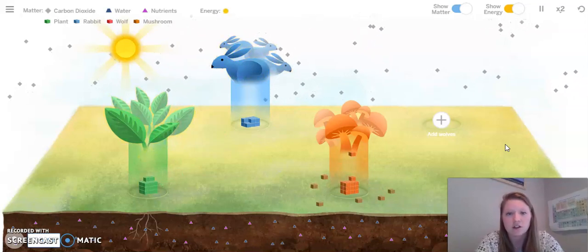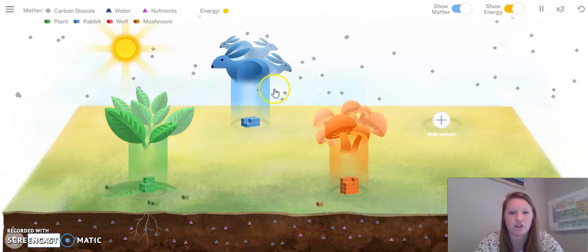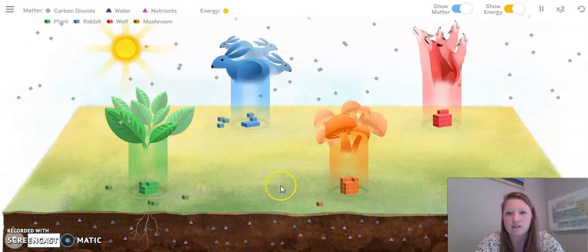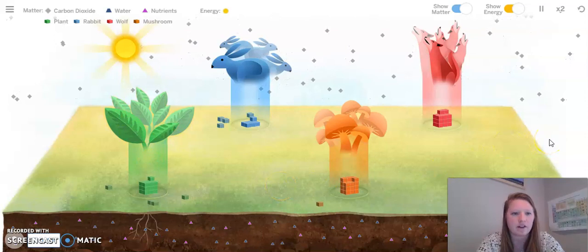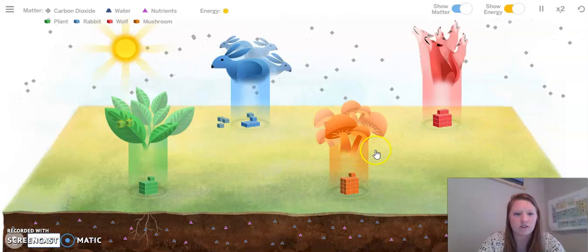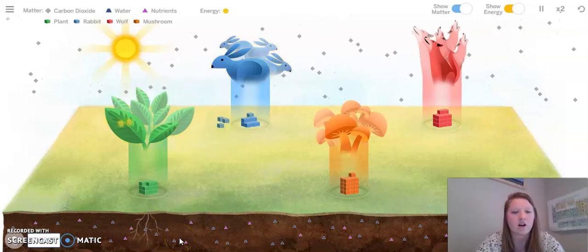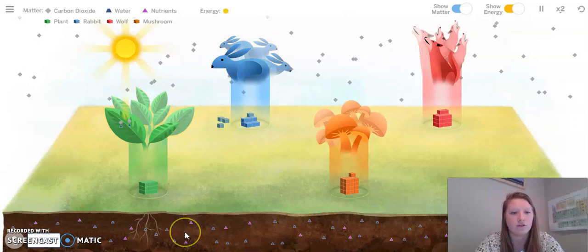I can see that the amount of cubes in the mushroom area is starting to get really big. Remember, this is matter, so the mushrooms have a lot more matter than the other two categories. I'm going to add the wolves back for just a few more moments and see if it starts to do anything new. I also notice in the soil by the plants, I see roots, which is how plants get their water and nutrients.